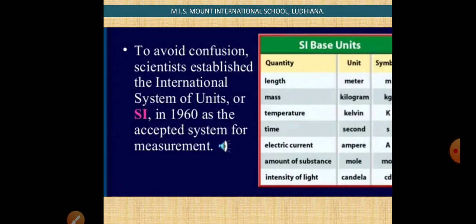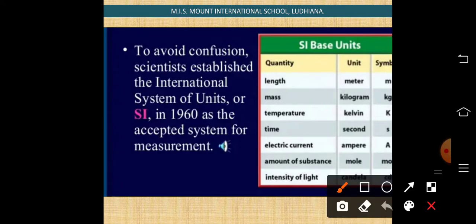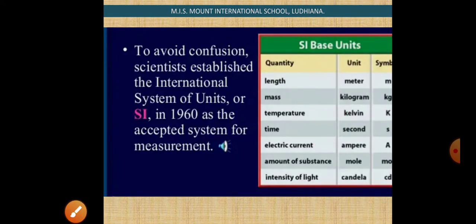In these units, for length, metre was accepted. For mass, kilogram was used as the SI unit. For temperature, Kelvin was used. For time, seconds. To measure current or electricity, ampere was used. To know the amount of substance which is smaller, moles were used. And intensity of light was measured in candela. These were some basic SI units.